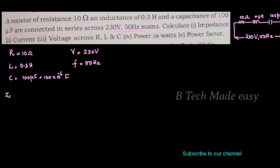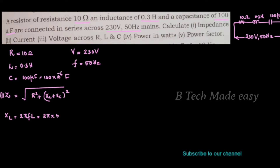We have to find out the value of Z, which is equal to root of R square plus XL minus XC the whole square. XL is equal to 2 pi f into L, which is equal to 2 pi into 50 into 0.3 henry. This gives XL equal to 94.24 ohm.